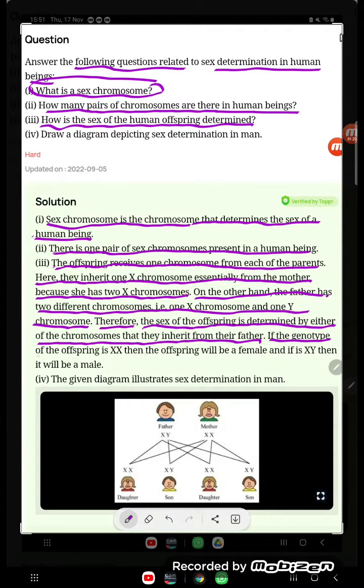If the genotype of offspring is XX, then the offspring will be female. And if XY, then it will be male.